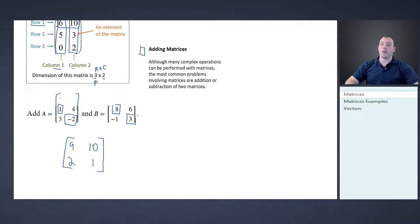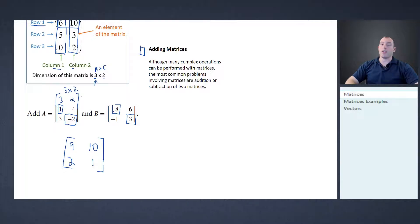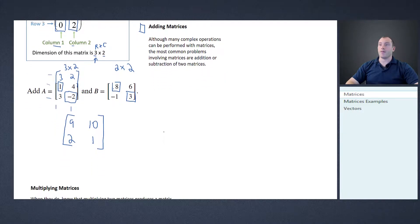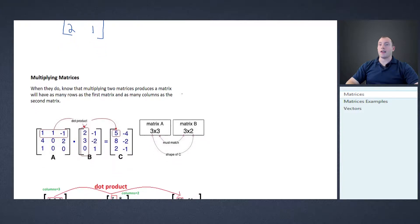What if matrix A had an extra row — say it was three by two, with three rows and two columns — and matrix B was two by two? You wouldn't be able to add them; they'd be mismatched. Only matrices with the same number of rows and the same number of columns can be added together.